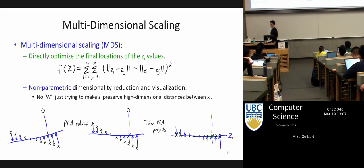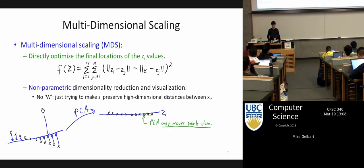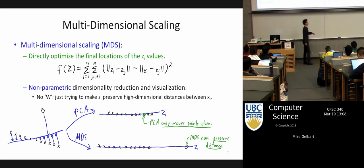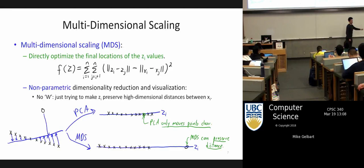That illustrates why PCA might not do well here. Whereas if we ran MDS on this data set, we might get output that preserves these distances — that outlier point was far away, so it gets put far away in the MDS output.